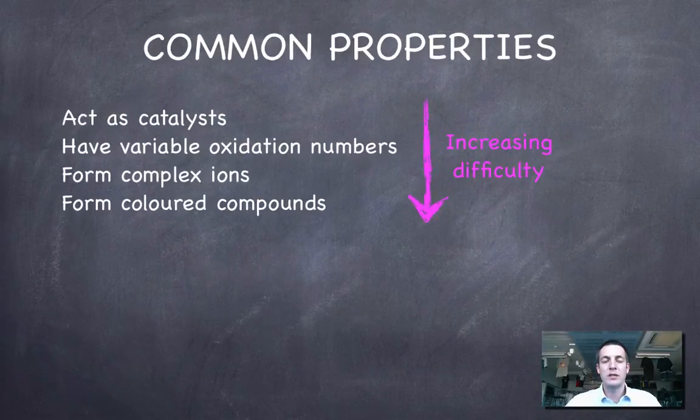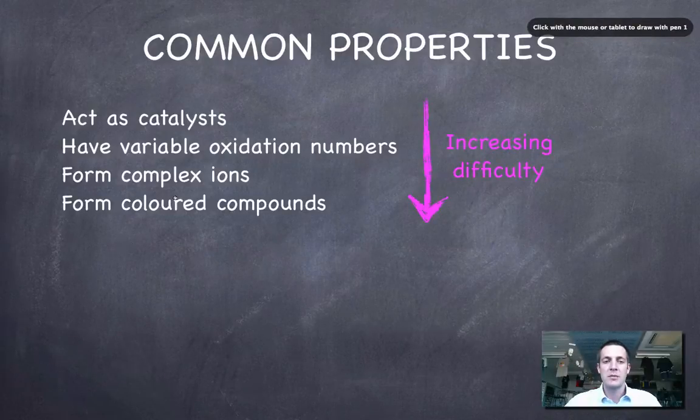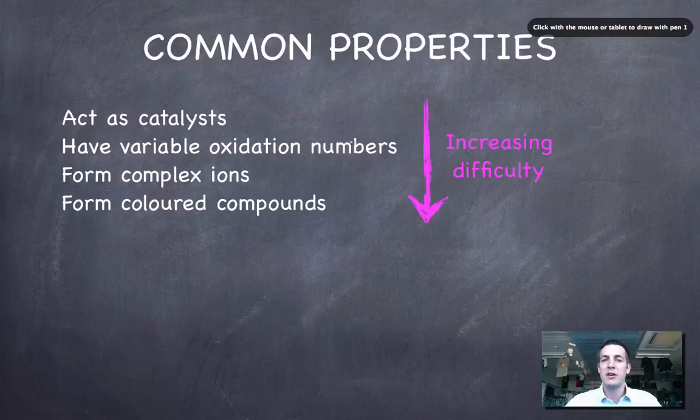And if we think about what we need to know about these elements, well we're going to start off by saying something about their ability to act as catalysts and the fact that they have variable oxidation numbers, or in other words can have different charged ions, kind of, although that's a slight oversimplification. And then because these two things are basically just factual,